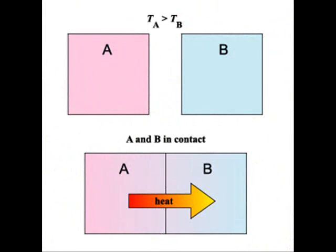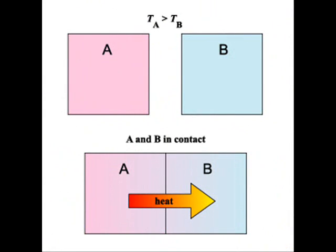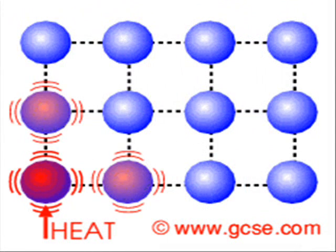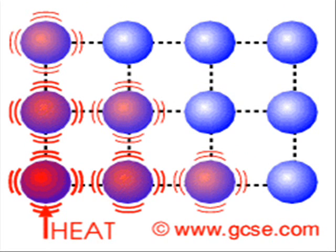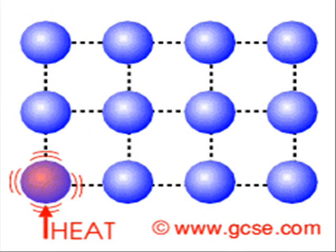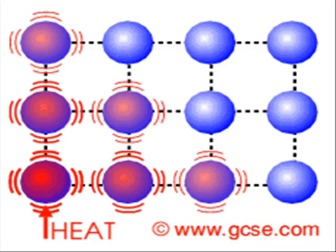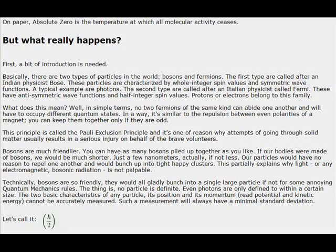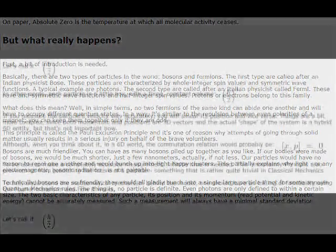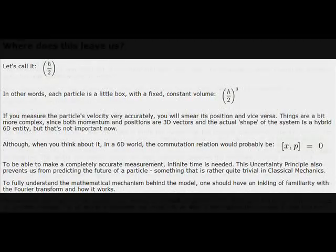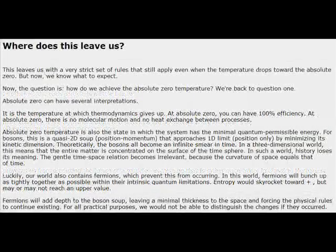This also conceptually explains why heat cannot spontaneously travel from cold to hot, because the hot molecules will always jiggle the slow ones into moving faster or bounce them around more. So if temperature can be thought of as a scale of how fast the molecules are jiggling, what happens when you cool something down to the point where the atoms stop jiggling altogether?